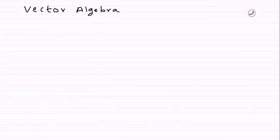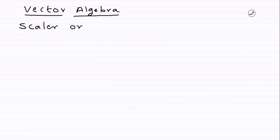Today we'll try to understand certain parts of vector algebra. This is the introductory lecture for vector algebra. First, we'll try to understand what is the meaning of scalar or dot product.